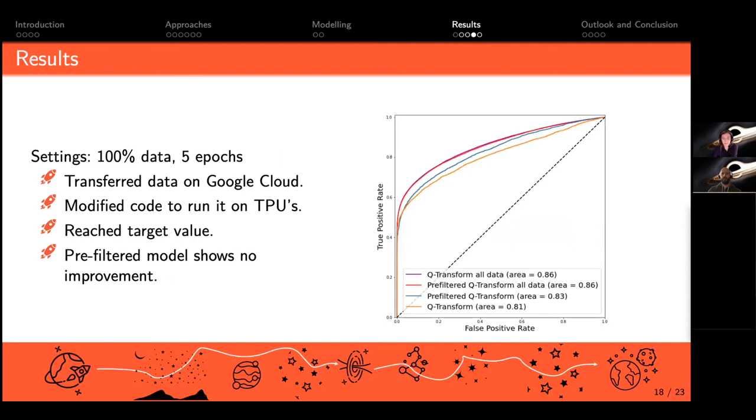We already reached really good results with five epochs. In order to do so, we had to transfer our data to the Google Cloud and we modified our code to run on TPUs to parallelize our code and get better computational time. By doing so, we were able to reach our target value.